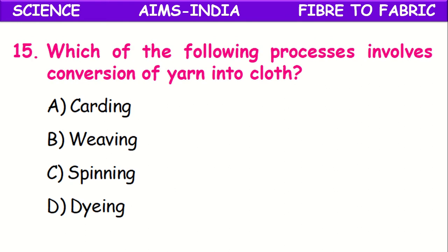Which of the following processes involves conversion of yarn into cloth? Yarn is made into fabric or cloth by the processes called either weaving or knitting. The process by which two or more yarns are made into a cloth directly is called weaving. So the answer is weaving.